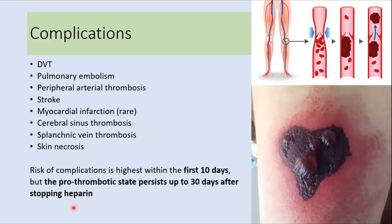Common complications of HIT arise from the hypercoagulable state and include DVT, pulmonary embolism, peripheral arterial thrombosis, stroke, myocardial infarction, cerebral sinus thrombosis, splenic vein thrombosis, skin necrosis, and adrenal insufficiency due to thrombosis in the adrenal circulation. Complications usually occur within the first 10 days of disease, though the prothrombotic state can persist up to 30 days after starting heparin.